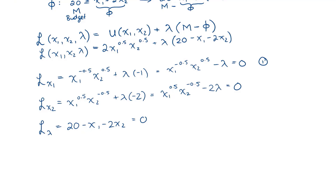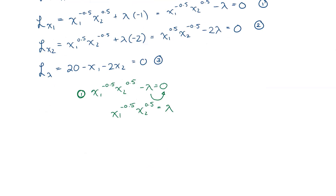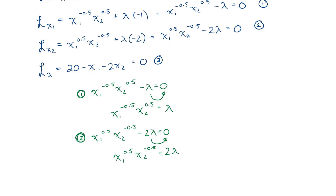Calling these equation 1, equation 2, and equation 3: for equation 1, x1^(−0.5) · x2^0.5 minus lambda equals 0. Moving lambda over: x1^(−0.5) · x2^0.5 equals lambda. For equation 2, x1^0.5 · x2^(−0.5) minus 2·lambda equals 0. Moving 2·lambda over: x1^0.5 · x2^(−0.5) equals 2·lambda. Dividing both sides by 2: 0.5 · x1^0.5 · x2^(−0.5) also equals lambda.